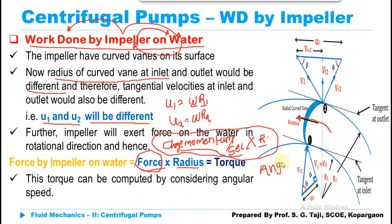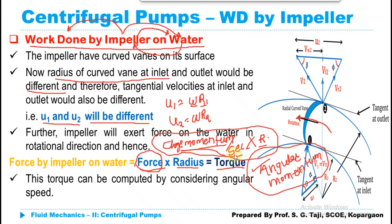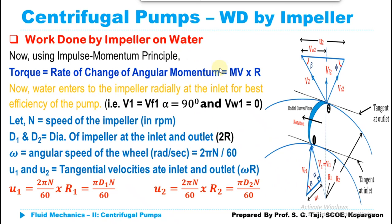When calculating the torque exerted by the impeller on the liquid, we need to consider angular momentum, not just linear momentum. The torque equals the rate of change of angular momentum. Using the impulse-momentum principle, this rate of change of angular momentum is given by mass times velocity multiplied by radius r.